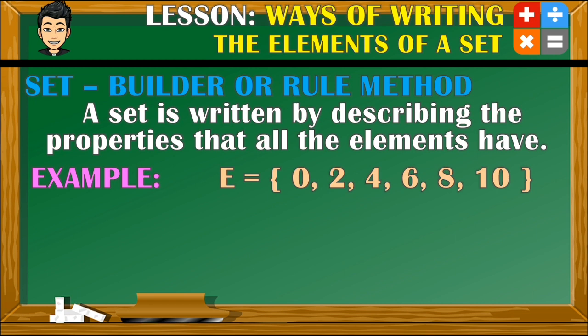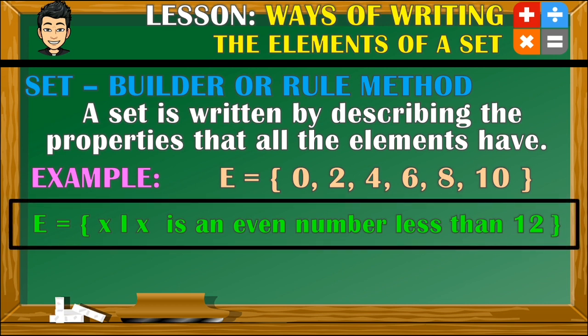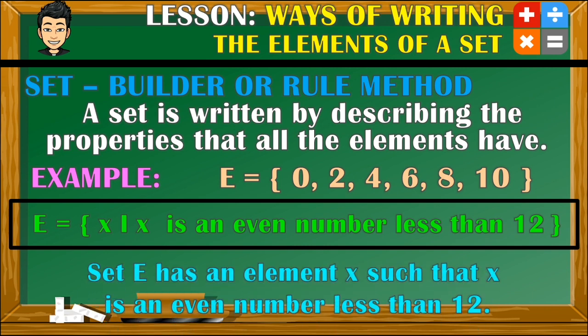Next, we have set E with the following elements. Looking at the elements, we can say that they are all divisible by 2, and those numbers that can be divided by 2 are called even numbers. However, it is not enough to say that they are just even numbers, because if we say so, then why is 12 not included in this given set? So again, you have to be specific in describing the elements of a set when you represent them in set builder or rule method. So in this example, set E will be represented like this. Set E has an element x such that x is an even number less than 12.